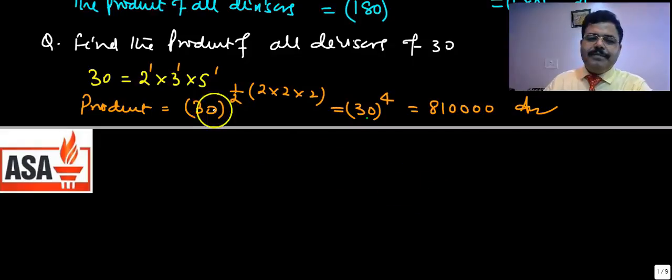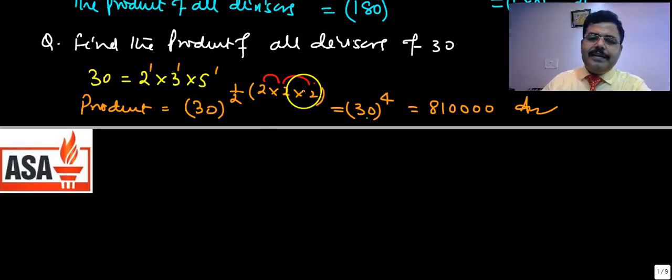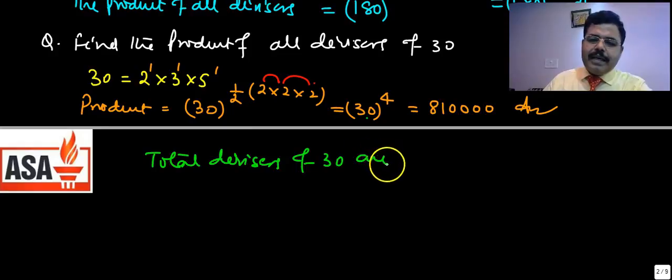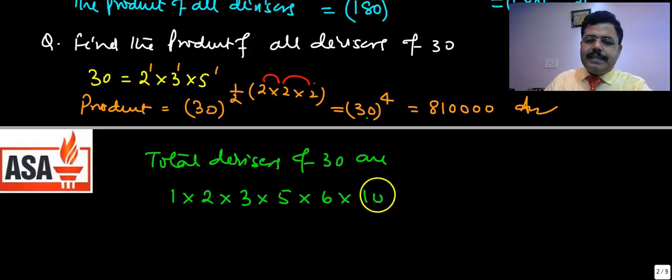Let me verify this. The total number of divisors of 30 is 2 × 2 × 2 = 8. The eight divisors of 30 are 1, 2, 3, 5, 6, 10, 15, and 30.